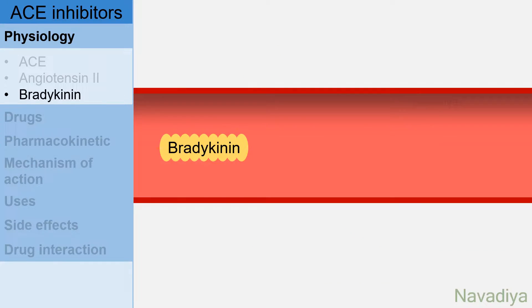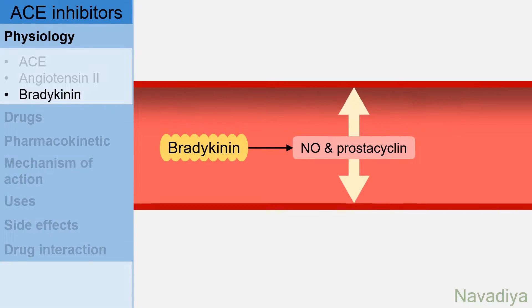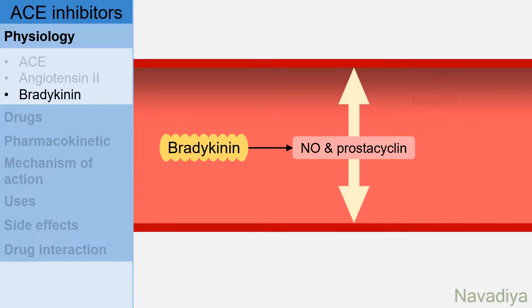Now, bradykinin. It increases synthesis of nitric oxide and prostacyclin. They cause vasodilatation which causes a fall in blood pressure. So this was some physiology.